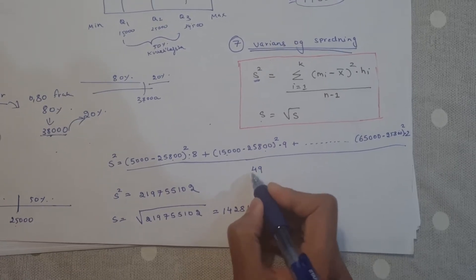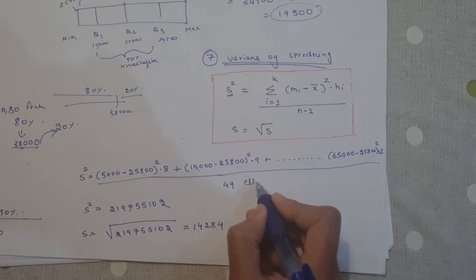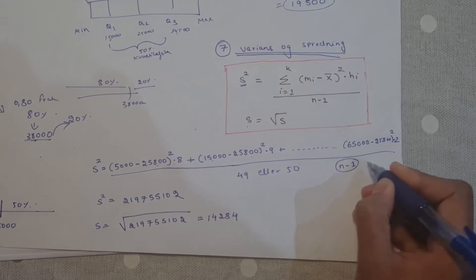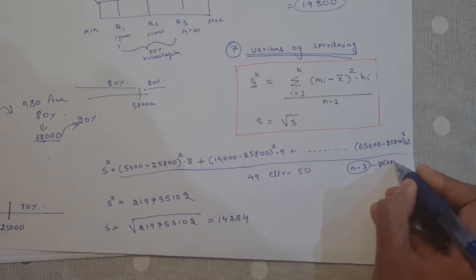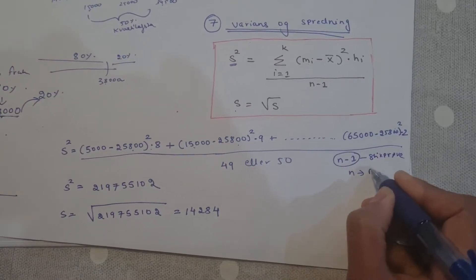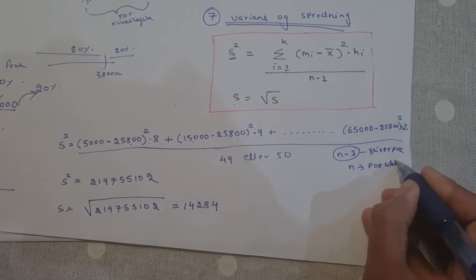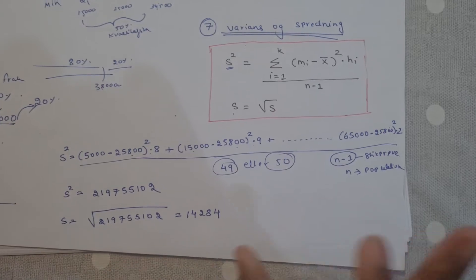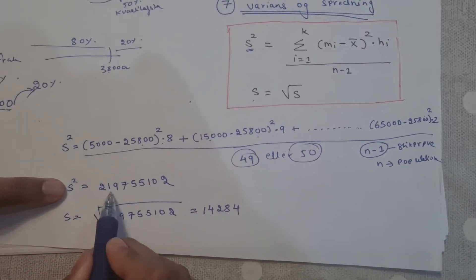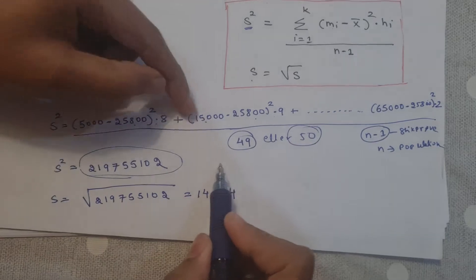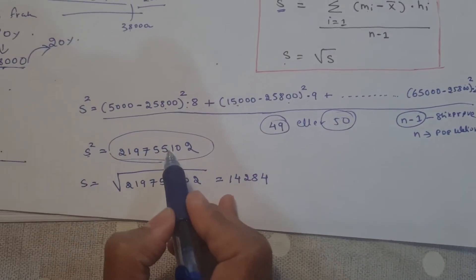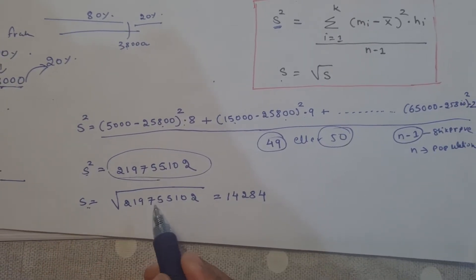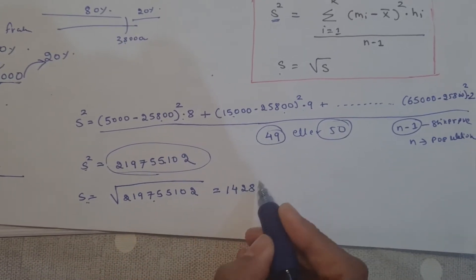Now you write n or n-1: if you write n or n-1, both are acceptable. But generally, we use n-1 for samples and n for populations. I will accept both. If it's a sample, use n-1; if it's a population, use n. That's also okay. So my variance, I have calculated it here.